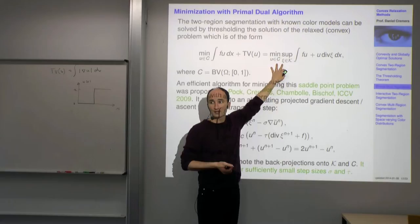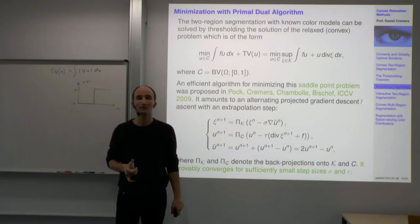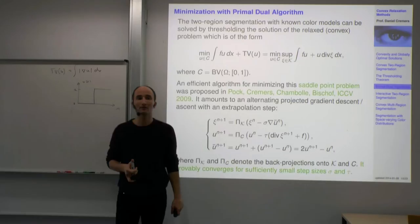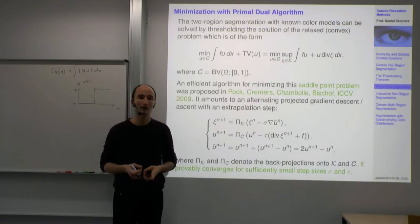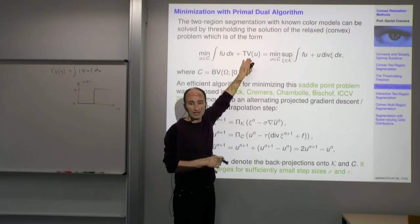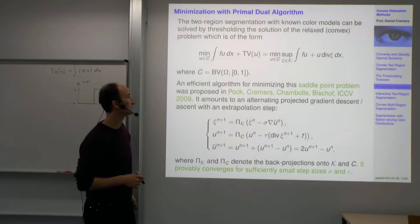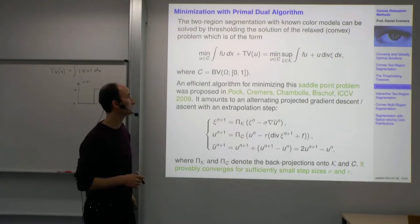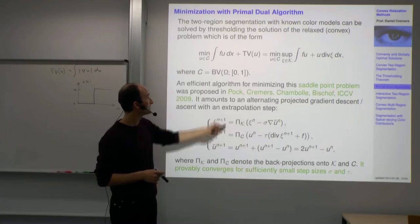The dual variables drastically increase the number of variables you have to store in memory. But it's common in optimization that problems become simpler when you add auxiliary variables. By adding them, the total variation, which was non-differentiable, becomes differentiable — it's just bilinear in U and xi. It hardly gets simpler than that, but you do have additional variables.